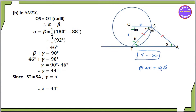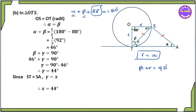Alpha plus beta plus 88. And we call it radii.